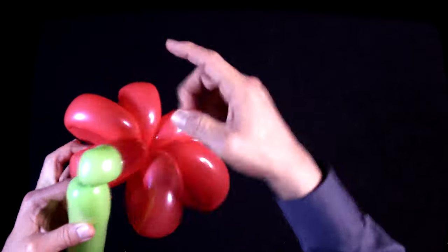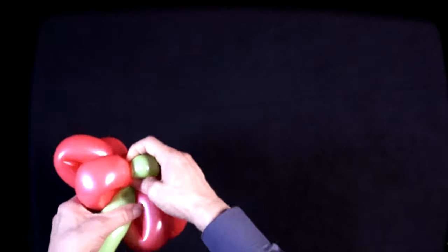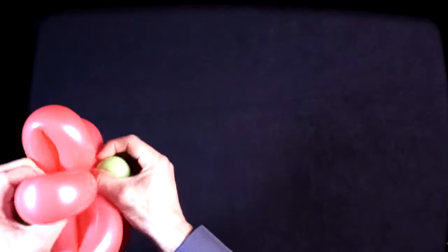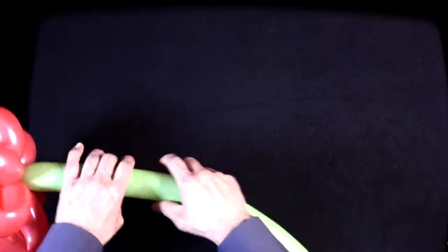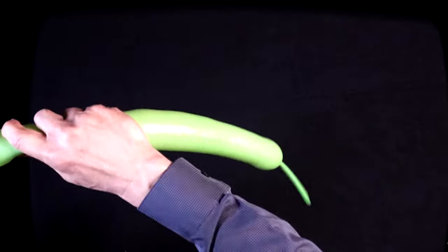Now all you do is take this and place it in the middle of the flower. Now we have to make the bracelet. This is the easy part.